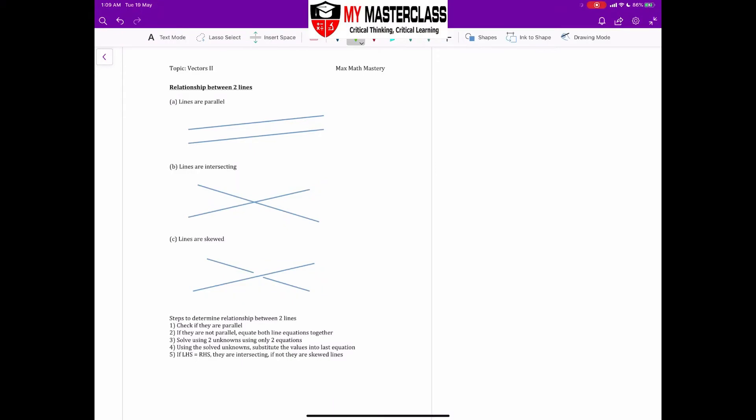So for this part, we're going to talk about the relationship between two lines. The relationship between two lines essentially can have three different kinds: First, the lines are parallel. Second, the lines intersect. Or the lines are skewed.